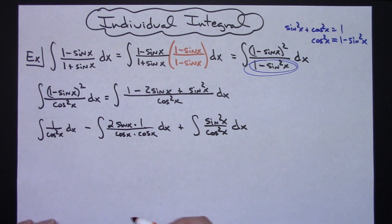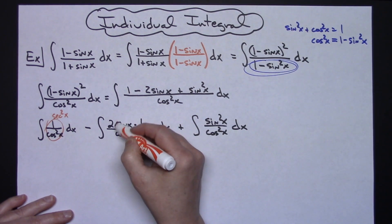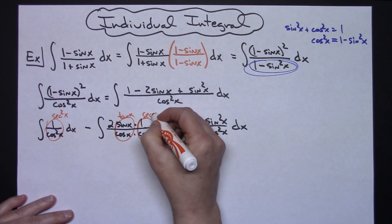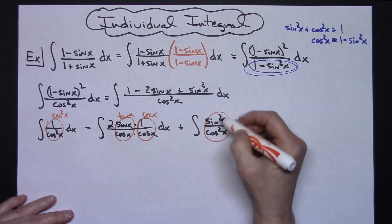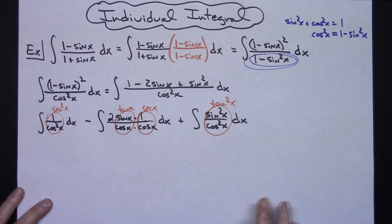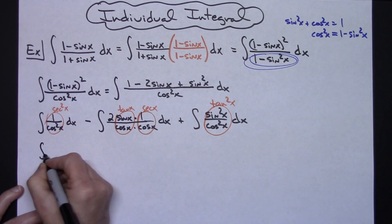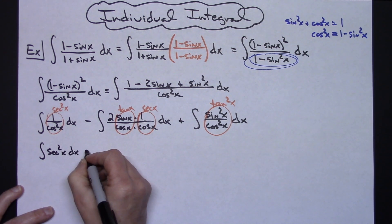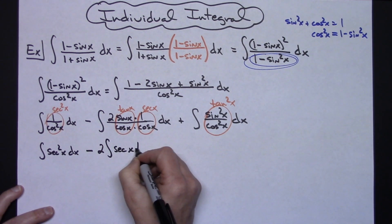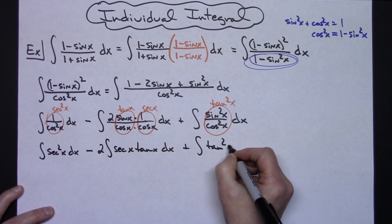Looking at what we've got: 1 over cosine squared is secant squared x. For the middle term, sine over cosine is tangent and 1 over cosine is secant x. And sine squared over cosine squared gives tangent squared x. Utilizing those trig identities, we now have the integral of secant squared x dx, minus 2 times the integral of secant x tangent x dx, plus the integral of tangent squared x dx.